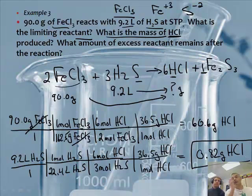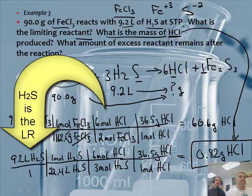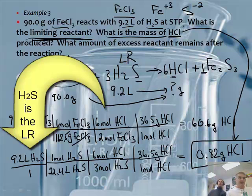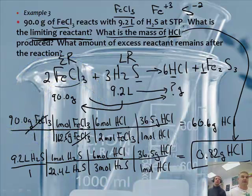So obviously H₂S is the limiting reactant — we're going to run out of H₂S first. This is actually the answer to what is the mass of HCl: 0.82 grams. And the limiting reactant is the 9.2 liters of H₂S, the one that produced the smallest amount. That makes FeCl₃ the excess reactant.